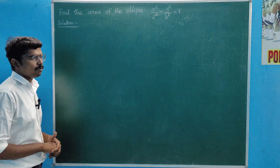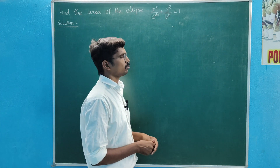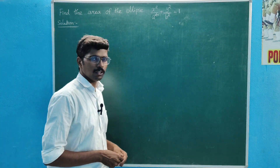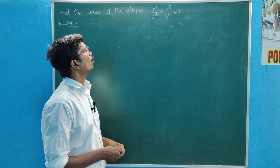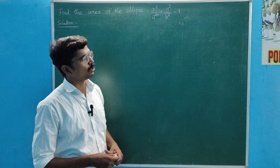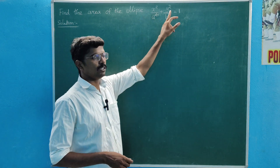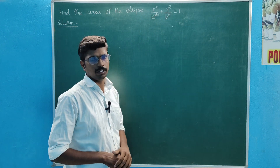Find the area of the ellipse: x²/a² + y²/b² = 1. This is the ellipse equation — that is an ellipse.